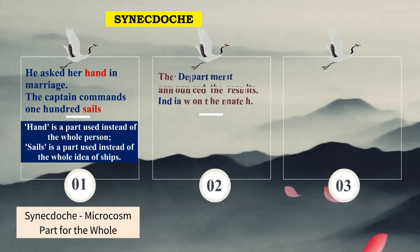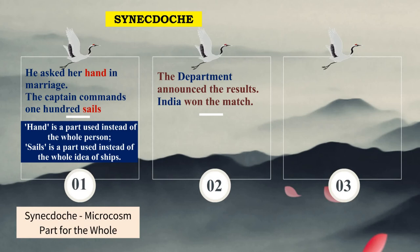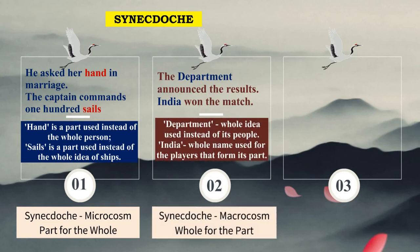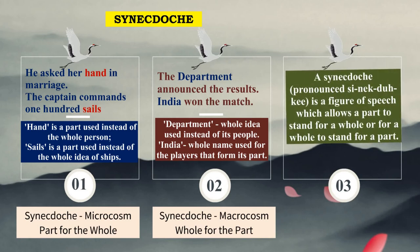As against this, 'The department announced the results' — department is made up of people, so instead of naming all those people, we use the whole word department. Similarly, 'India won the match' — instead of saying the players of the Indian team, we say India. So it is the whole used for the parts, called the macrocosm type. To define synecdoche: it is a figure of speech which allows a part to stand for a whole, or a whole to stand for a part.